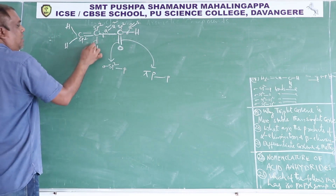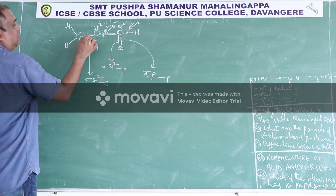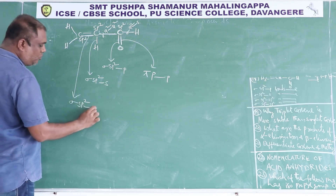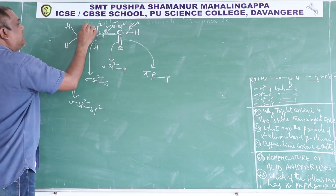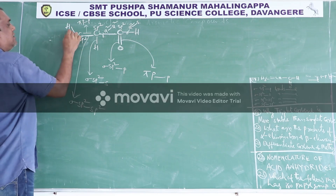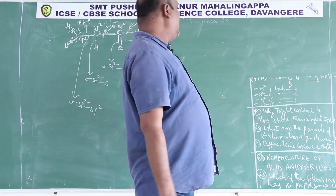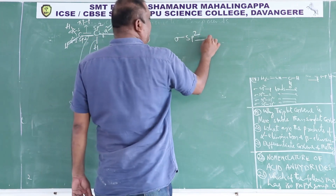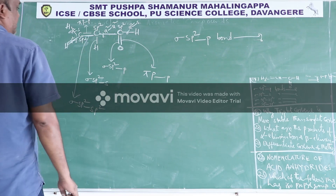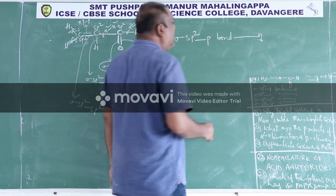This C-H bond is a sigma bond: SP2 hybrid orbital of carbon overlaps with the S orbital of hydrogen. The C-C bond is sigma: SP2 of this carbon overlaps with SP2 of the next carbon. The C=O bond has a sigma component: SP2 of carbon overlaps with P orbital of oxygen. Another bond is formed by overlapping of P orbital of carbon with P orbital of oxygen — that is the pi bond. The question asks: how many sigma SP2-P bonds are there? Only one. Answer is 1.